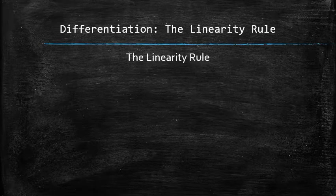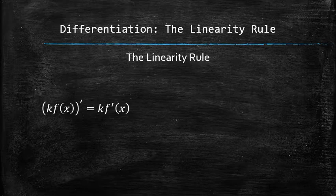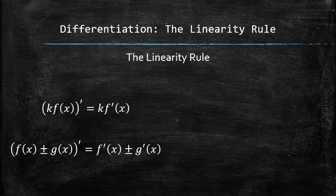The linearity rule has two parts. One says that we can factor out the constant and the other states that the derivative of the sum or the difference is the sum or the difference of the derivatives.